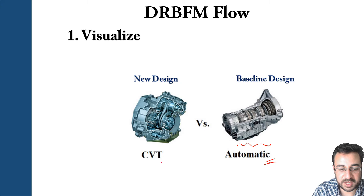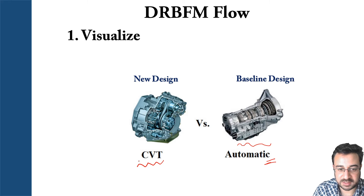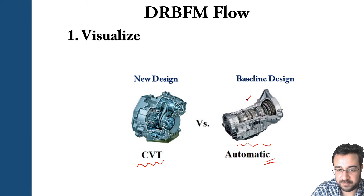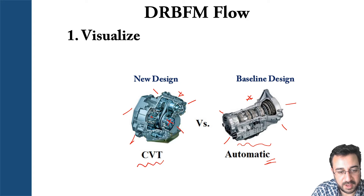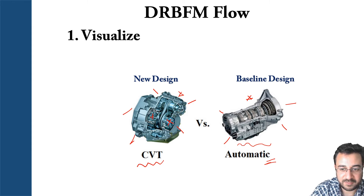So your baseline design is the automatic transmission, and you compare it with the new design — a continuously variable transmission, known as CVT. You start with the full picture, and then you need to do an exploded view for the new design to call out components, discuss concerns, and show any issues with the new design compared to the old. Fitting the new design into the system will raise certain concerns to be resolved using the DRBFM process.